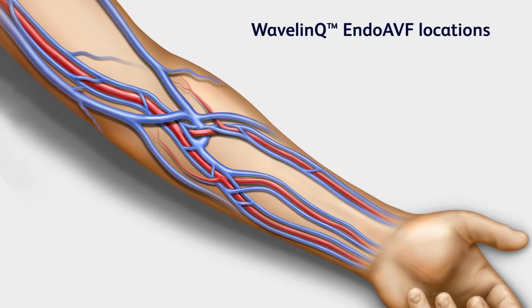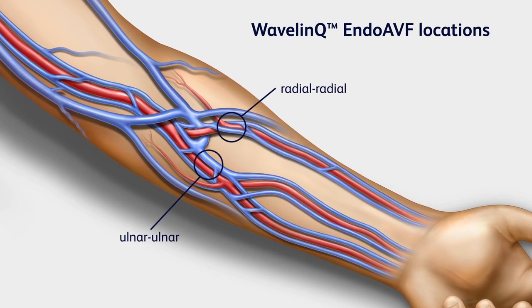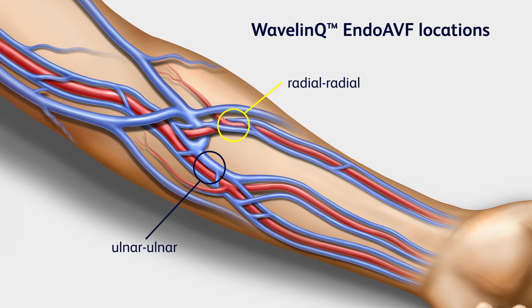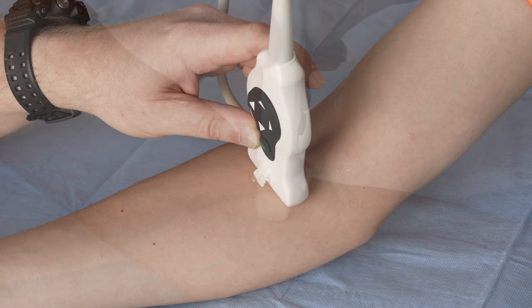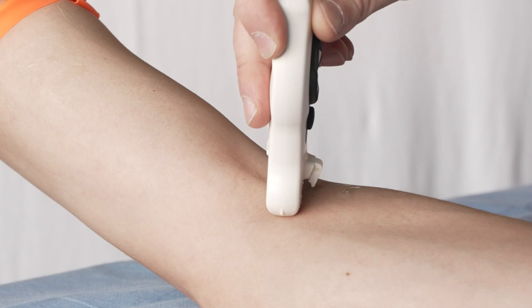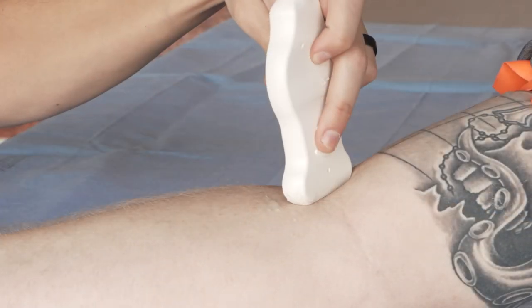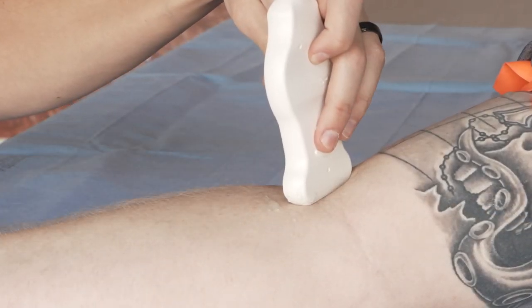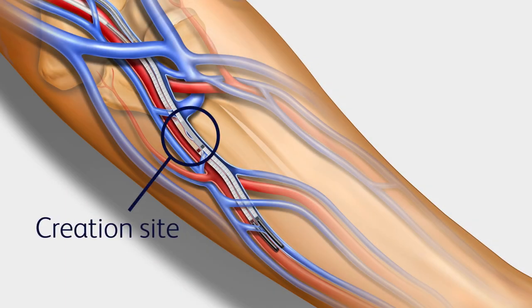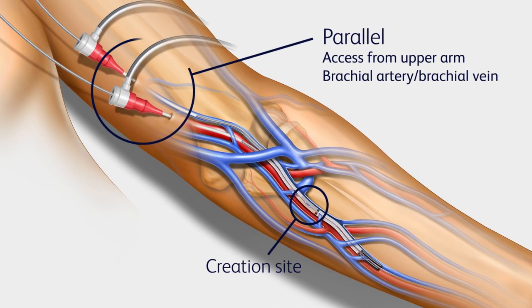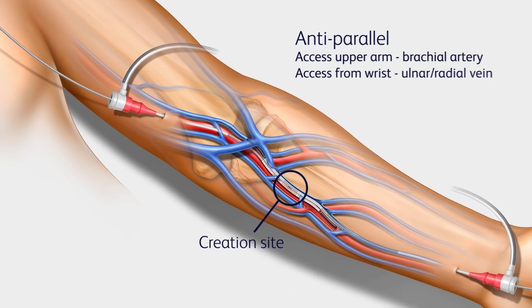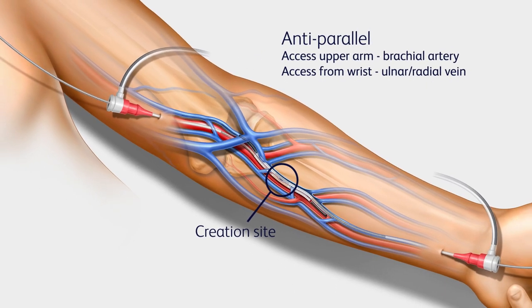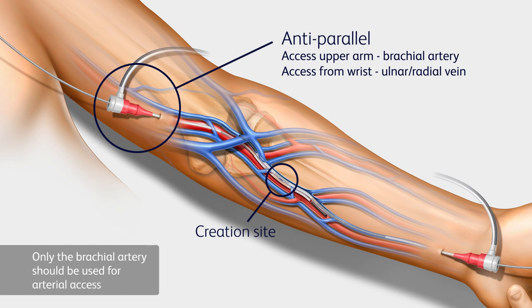Your procedure plan starts with choosing the Endo-AVF creation site, either ulnar or radial. Because human anatomy differs from person to person, your approach to the Endo-AVF creation site will vary, and the Wavelink Endo-AVF System allows for this. You may choose a parallel approach by accessing the upper arm brachial artery and brachial vein, or an anti-parallel approach by accessing the upper arm brachial artery and the ulnar or radial vein at the wrist.